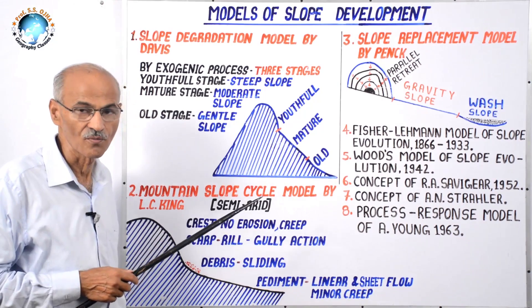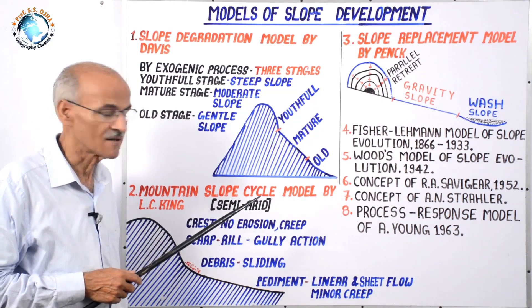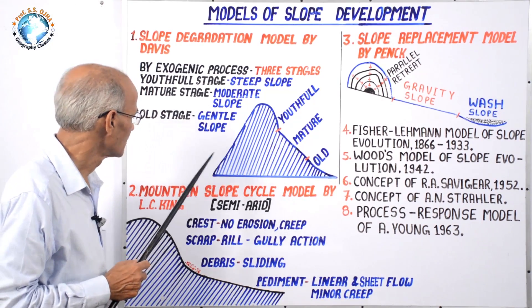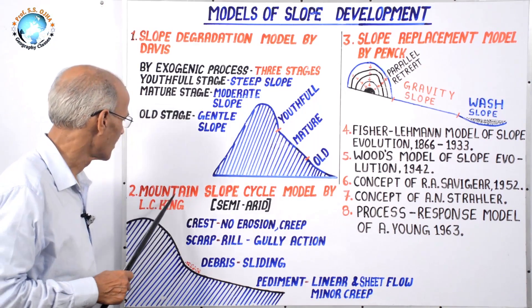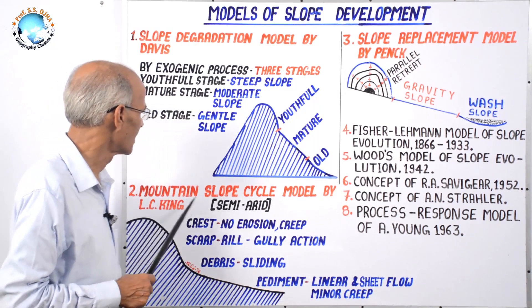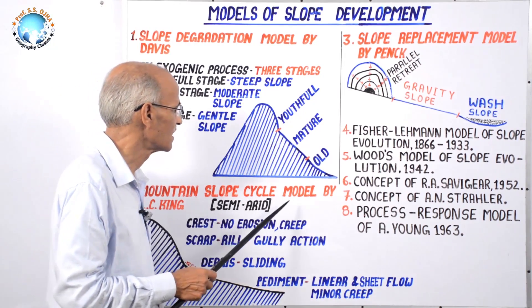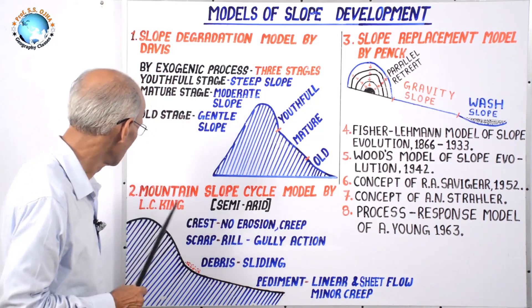All models regarding slope development aim at producing a gentle slope in the final stage. The second model is the mountain or hill slope cycle model by L.C. King.